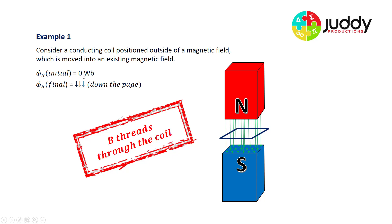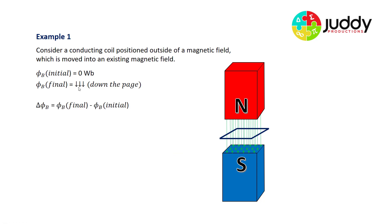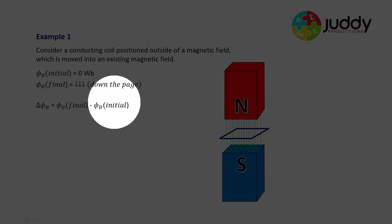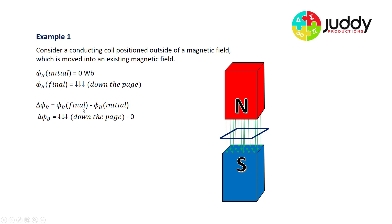We started with initial flux of zero weber outside the field, and now we have a final flux moving down the page. Whenever we're looking at the change in something, we must compare the final from the initial — like measuring how much you've grown from the start of high school to the end of high school. In this scenario, the change of magnetic flux equals the final flux take away the initial flux. The final magnetic flux is down the page, the initial is zero, so our change in flux is down the page.